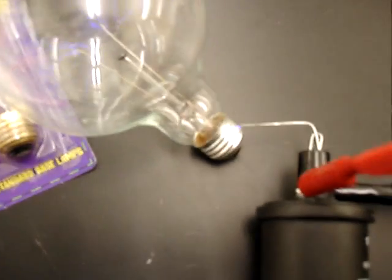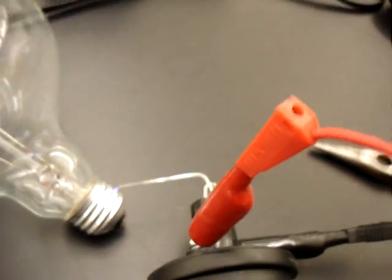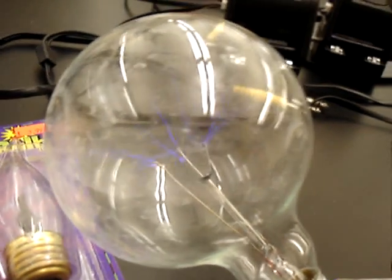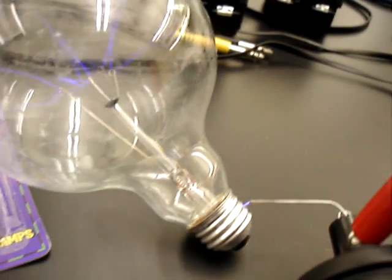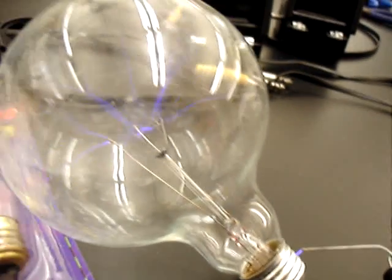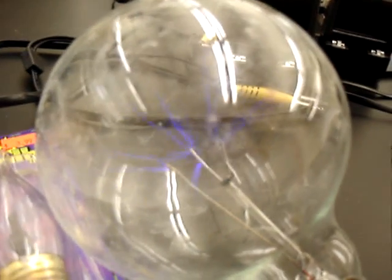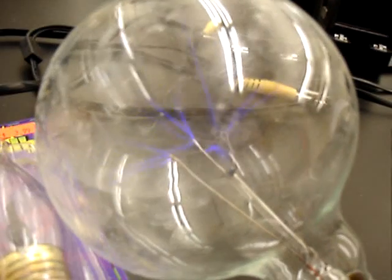One thing to note is the spark gap is actually fairly important. If you get rid of the spark gap, if you actually make a direct connection, you'll notice that not very much happens at all. But if you have a spark gap in here, then that acts like a tiny capacitor, and that helps the sparks form in this plasma globe.